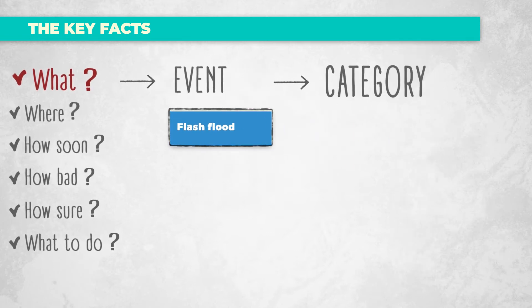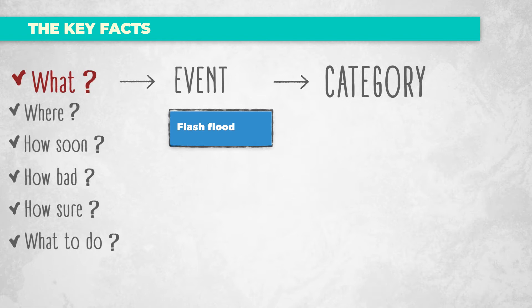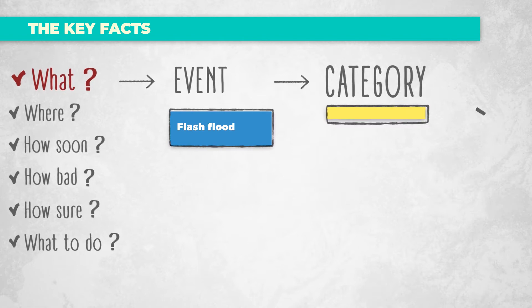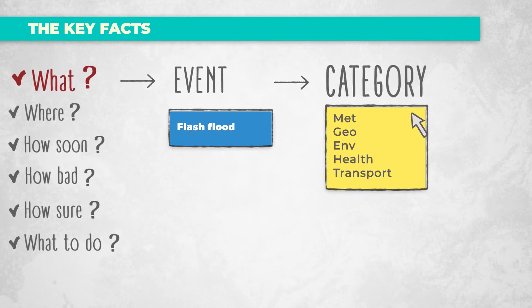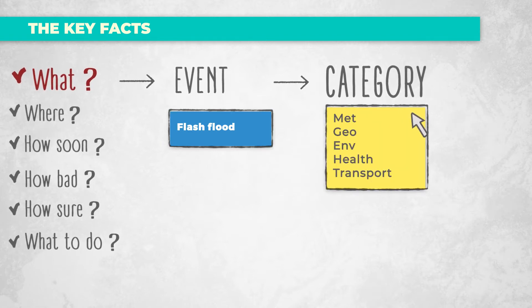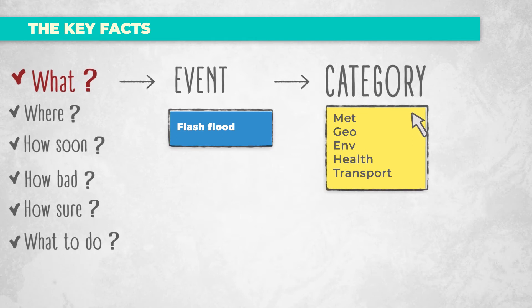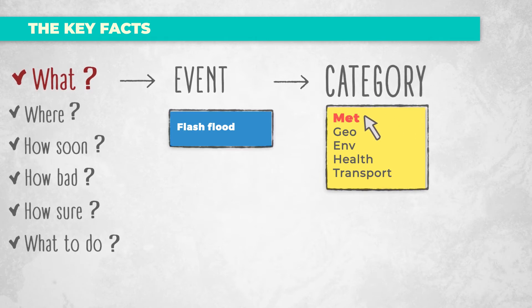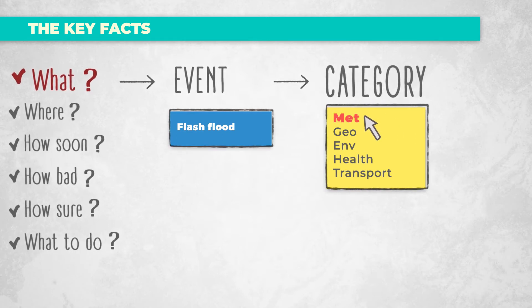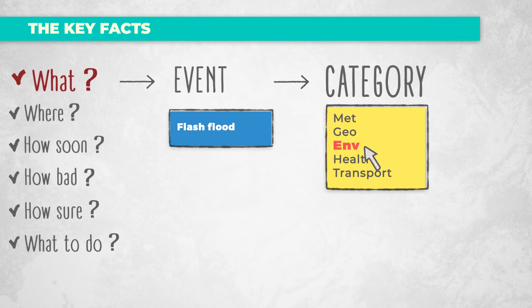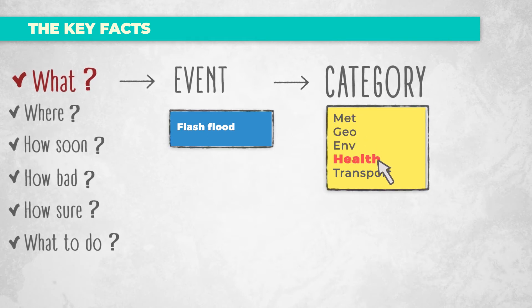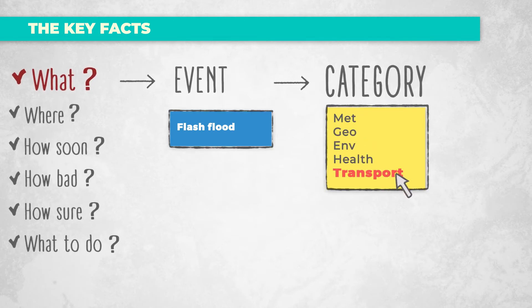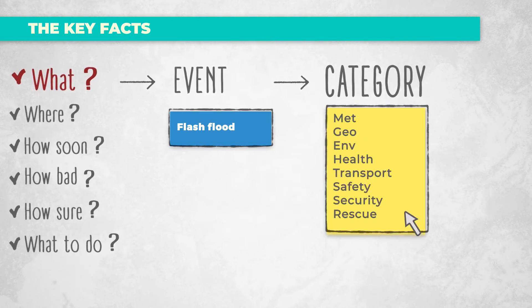Next, there is the category of the emergency. CAP messages can be used for any and all hazards. The category for our example of a Flash Flood is, of course, Meteorological. Other categories include Geophysical, Environmental, Health, or Transport, among others.